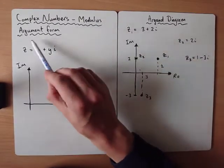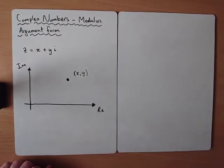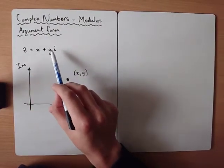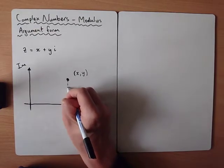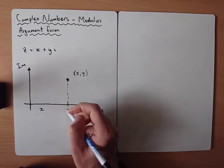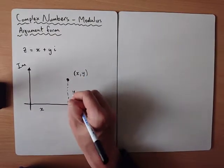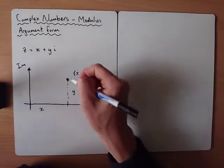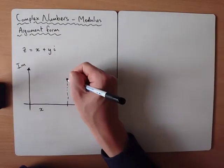With this in mind, we can represent complex numbers in two dimensions. We're going to use this to think about a new form called the modulus argument form. For a general complex number x + yi, moving x across and y up gives us a point on the Argand diagram.